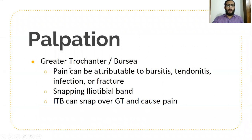Coming to palpation, we should palpate the greater trochanter to check whether there is bursitis or a snapping iliotibial band. The commonest site of pain of the iliotibial band is distally at the lateral condyle of femur, just proximal to 2 cm of the lateral joint line of the knee joint. But there is also a chance of snapping iliotibial band at the greater trochanter.